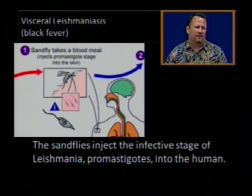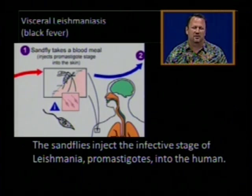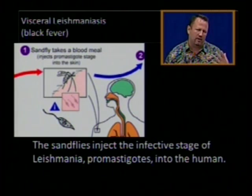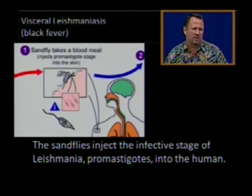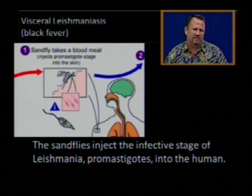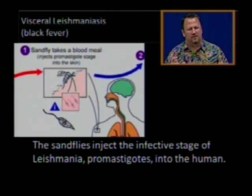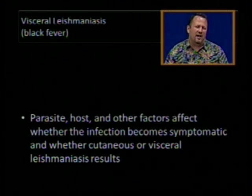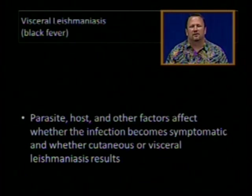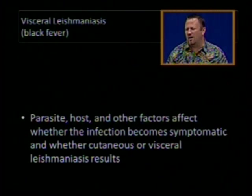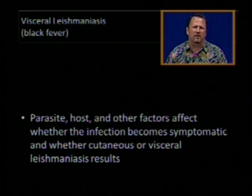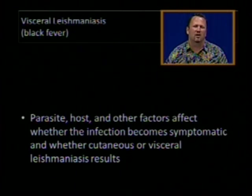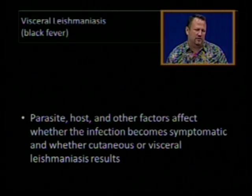That is the cycle of the parasite leishmania. All the life cycles of protozoa are very difficult to discuss, which makes these diseases very difficult to treat because the protozoa undergo so many different changes. There are different types of leishmania and various host factors that affect whether the infection becomes symptomatic and whether it results in cutaneous infection or visceral leishmaniasis.